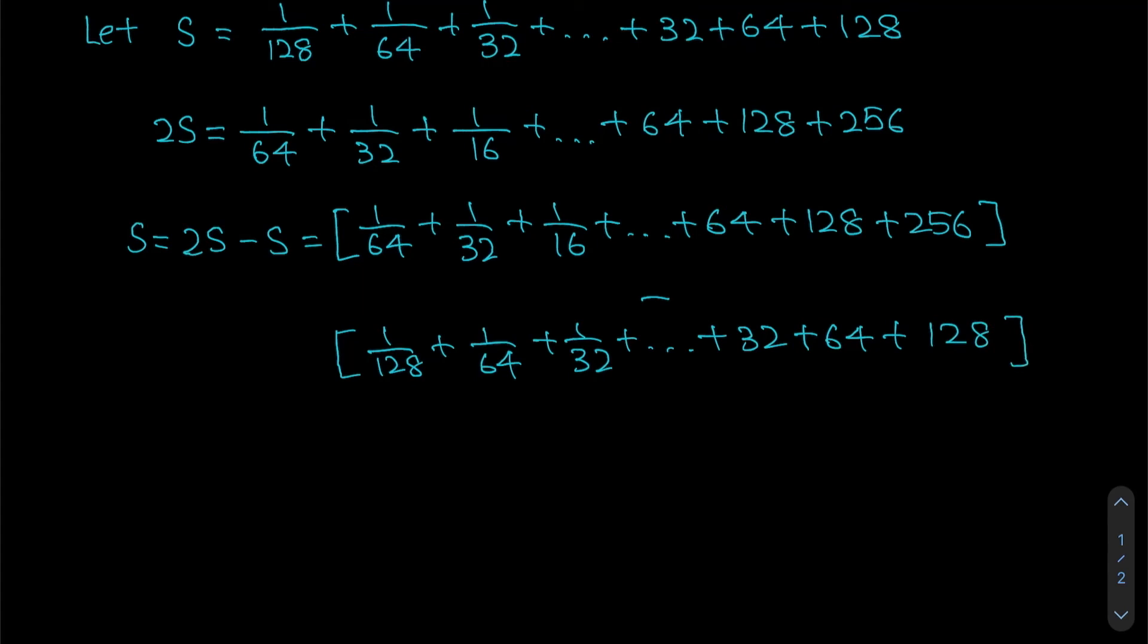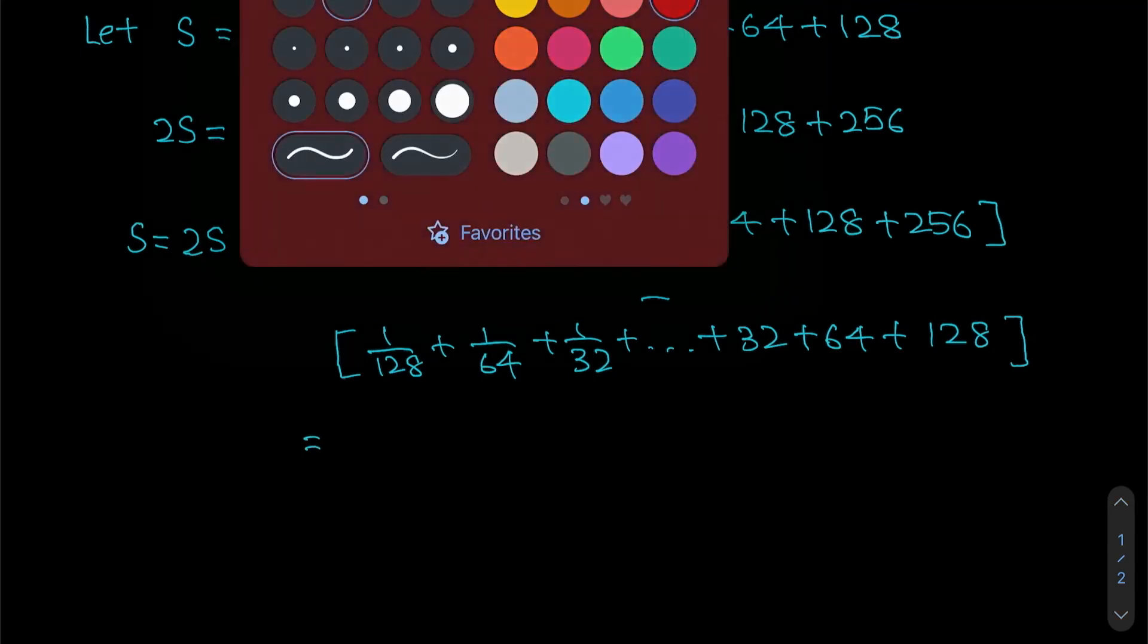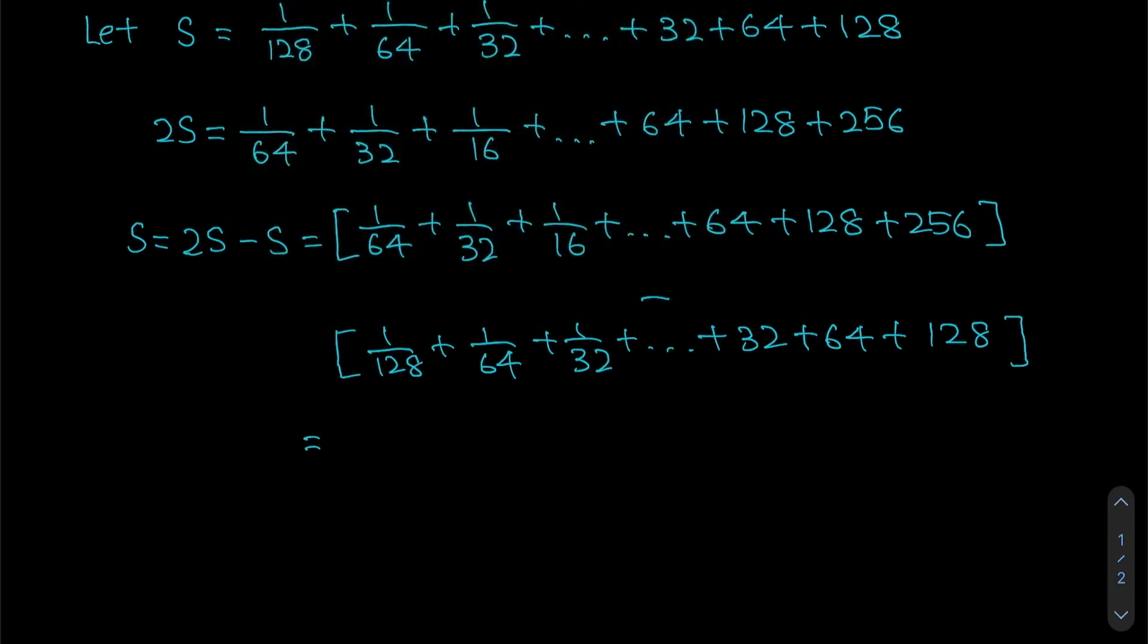So why do we do it as such? Because ultimately we want to find S. Now you will notice that you can do some cancellation when you take 2S, which is the one on top, minus the one below. So let's look at the right side.